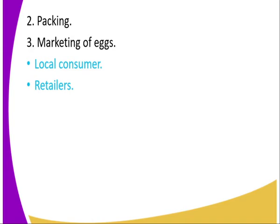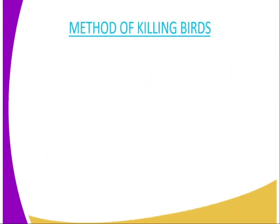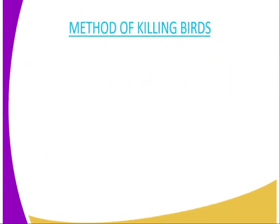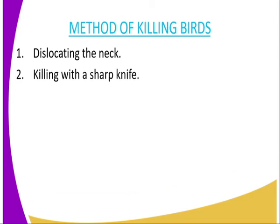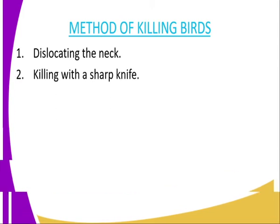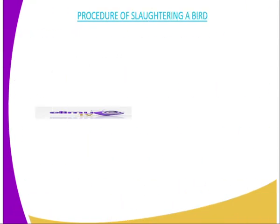Then we have the second marketing option — retailers. You can sell through retailers and also through cooperatives, through groups or societies that we refer to as a cooperative. Then methods of killing a bird: we have dislocating of the neck, and number two, you can kill the bird with a sharp knife.